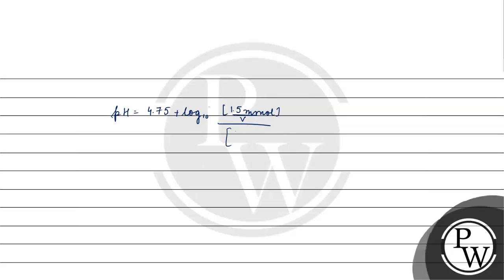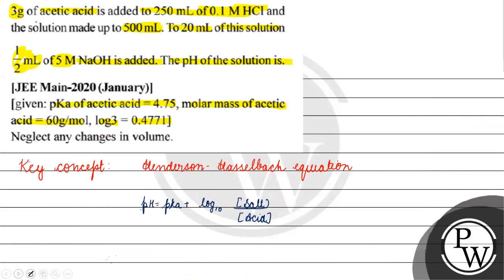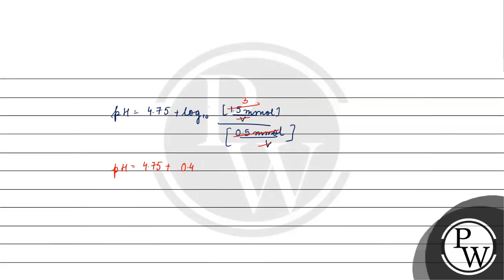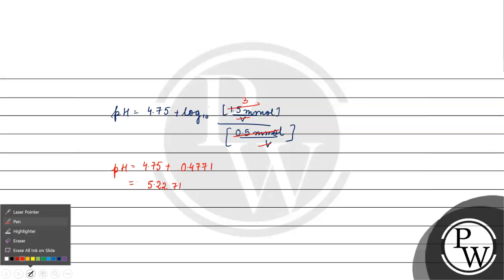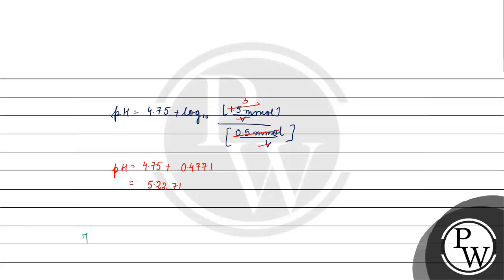Since volume V cancels in numerator and denominator, we have salt to acid ratio = 1.5 millimoles / 0.5 millimoles = 3. So pH = pKa + log(3) = 4.75 + 0.4771 = 5.2271. The pH of the solution is 5.2271. I hope you understood it well, thank you and all the best.